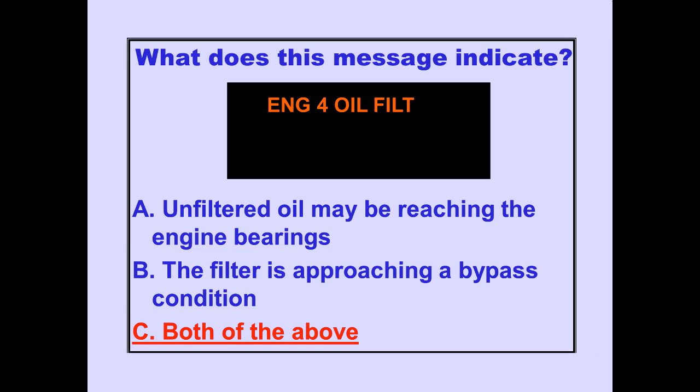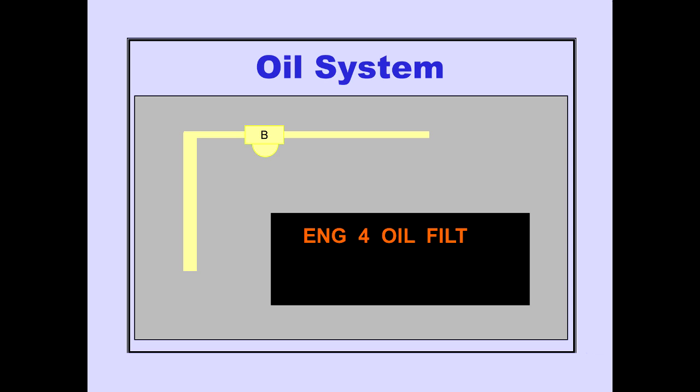The ICAS advisory message is displayed when a bypass condition approaches and will remain if bypass occurs. Reducing thrust on the affected engine may minimize bypassing unfiltered oil.